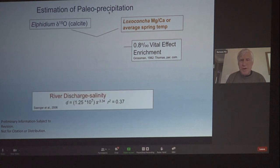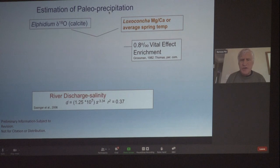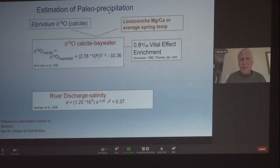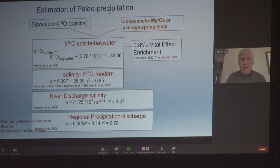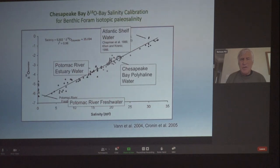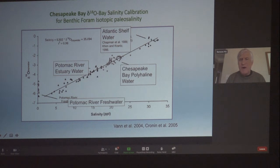The relationship between river discharge and salinity is strong, as you might expect from the watershed map. We use regional precipitation and river discharge data from USGS monitoring gauges. The negative delta O-18 values correspond to freshwater and the higher values to ocean water, making it a very good proxy of past salinity, which is driven by river discharge, which is driven by rainfall.